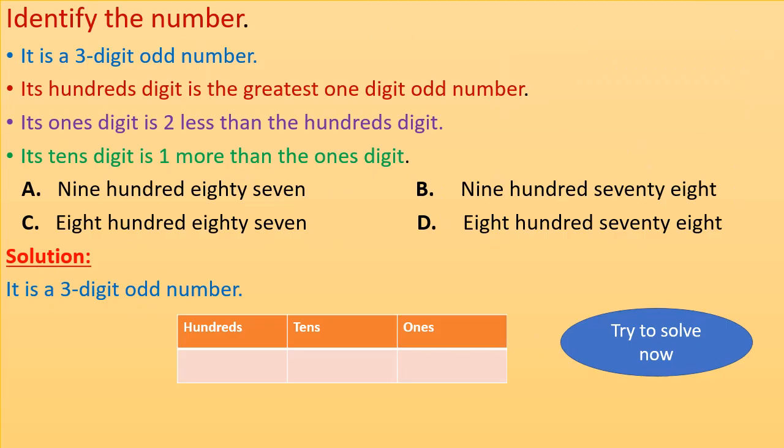Let's start the video. First question is identify the number. It is a 3-digit odd number. Its 100's digit is the greatest 1-digit odd number.